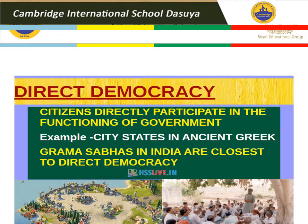Representatives are elected by the people, and this is how elections become important. Whenever we think of India as a democracy, our mind invariably turns to the last elections. Elections have today become the most visible symbol of the democratic process. We often distinguish between direct and indirect democracy. In direct democracy, citizens directly participate in day-to-day decision making and in running of the government.